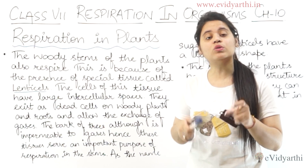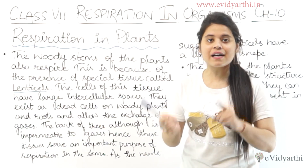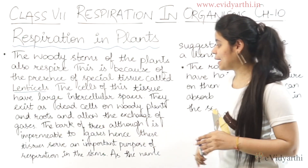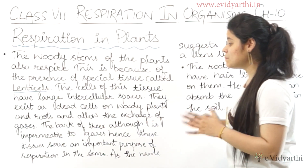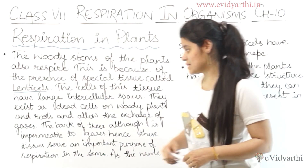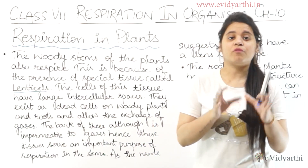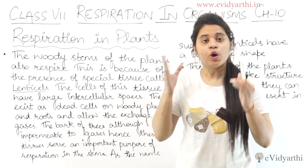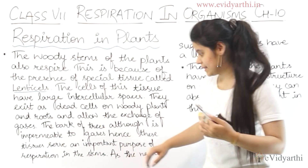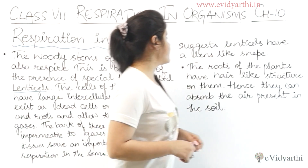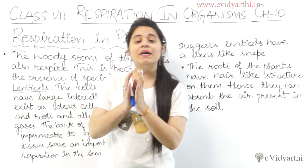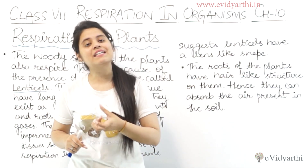Lenticels are like dead cells but they allow gases to be exchanged, making this tissue very important for respiration. The bark of trees is impermeable to gases, so these lenticels serve an important purpose of respiration in the stems — allowing gas exchange where the wooden stem otherwise would not permit any fluid or gas to pass through. As the name suggests, lenticels have a lens-like shape.